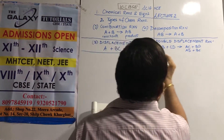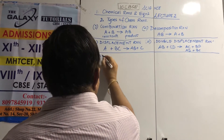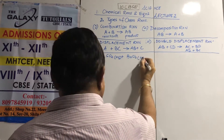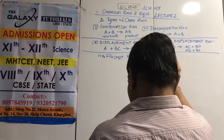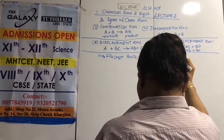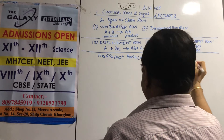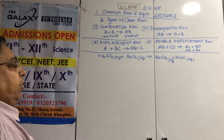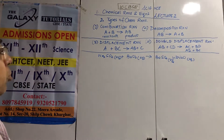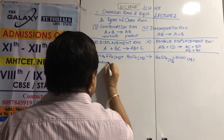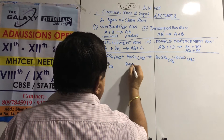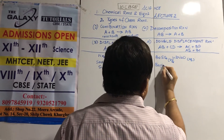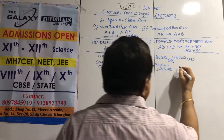Example: sodium sulfate plus barium chloride gives barium sulfate solid plus sodium chloride. Barium sulfate is a precipitate — indicated with a downward arrow as it comes out of solution.